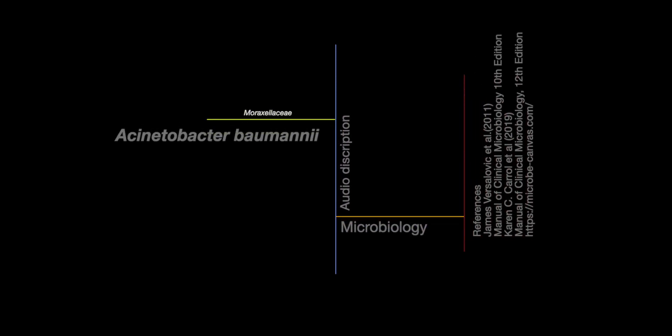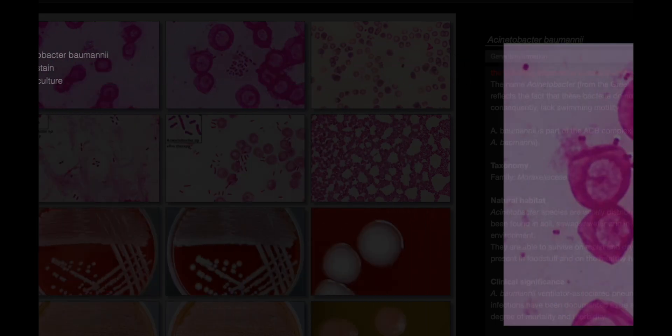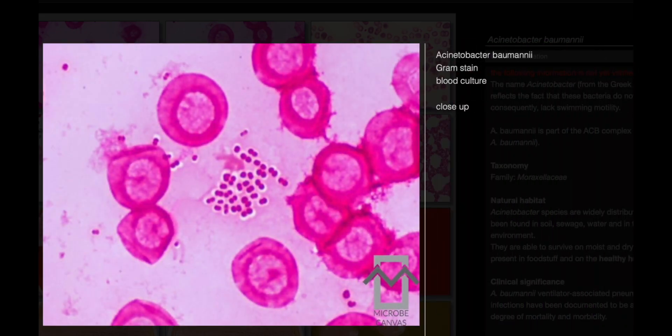Acinetobacter baumannii. General information. The name Acinetobacter, derived from the Greek term meaning non-motile, accurately describes the absence of flagella in these bacteria, resulting in their lack of swimming motility.